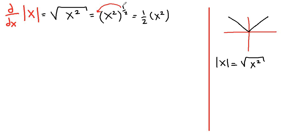And subtract 1 from the power which is going to be negative 1 half. And we need to multiply this by the derivative of inside function which is 2x.